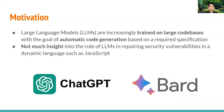With the rapid development of artificial intelligence, large language models, or LLMs in short, are increasingly trained on large code bases with the goal of automatic code generation based on a required specification, including automatic bug repair. However, we currently do not have much insight into the role of LLMs in repairing security vulnerabilities in a dynamic language like JavaScript.